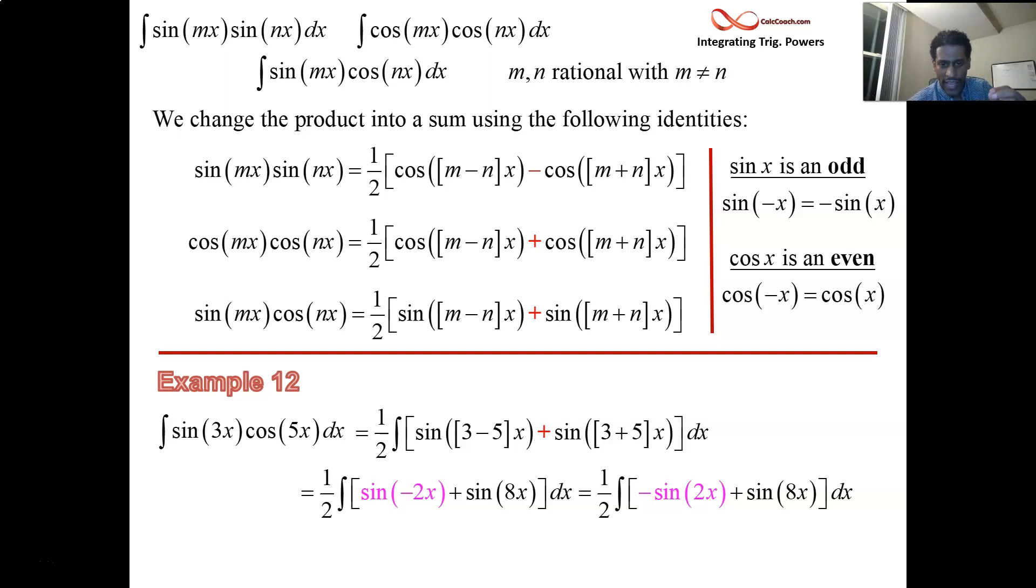Those double negatives cancel out. So the antiderivative of negative the sine of twice x is half the cosine of twice x. Antiderivative of the sine of 8x negative one eighth the cosine of 8x. We got the one half from the formula plus c. You can go ahead and put the half in if you want. So one fourth the cosine of 2x minus one sixteenth the cosine of 8x plus c.